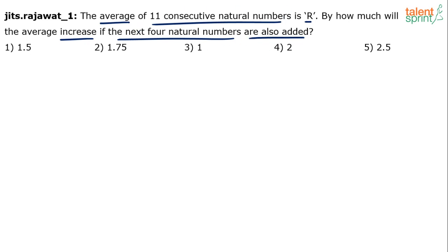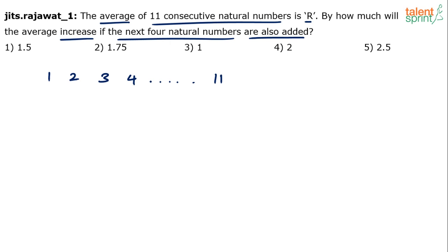You have 11 consecutive natural numbers for which the average is R. If you include the next four natural numbers as well, by how much will the average increase? The easiest way to solve this is to go with the assumption that these 11 consecutive natural numbers are 1 to 11, because the concept would remain the same irrespective of which 11 natural numbers you choose — whether 1 to 11, or 120 to 130, or 121 to 131.